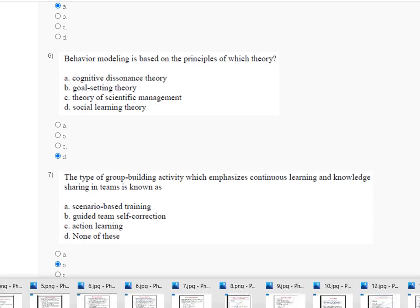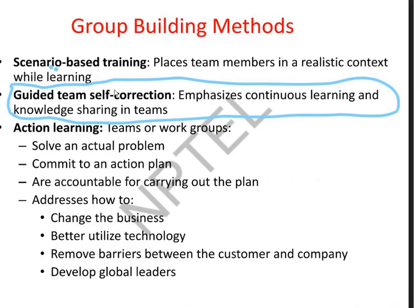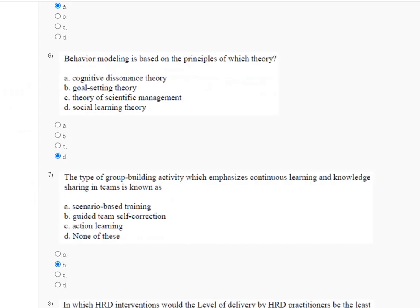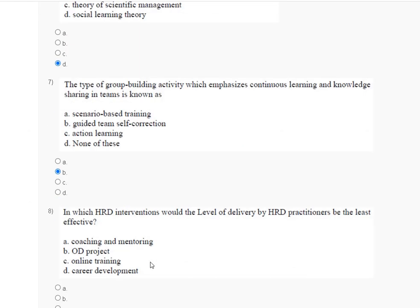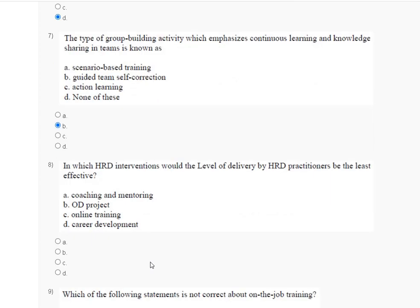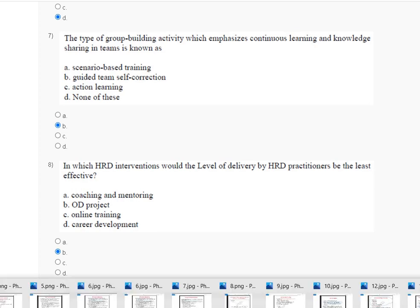Here is the explanation of question number 7 — guided team self-correction. Question number 8: in which HRD intervention would the HRD practitioner be the least effective? The correct answer is Option B — OD project. Here is the explanation of question number 8.